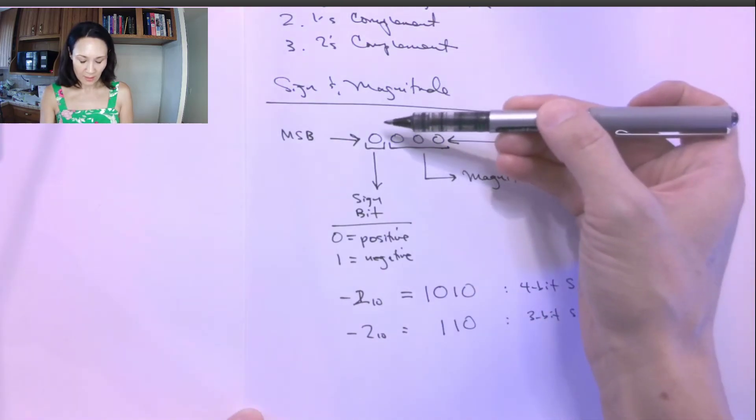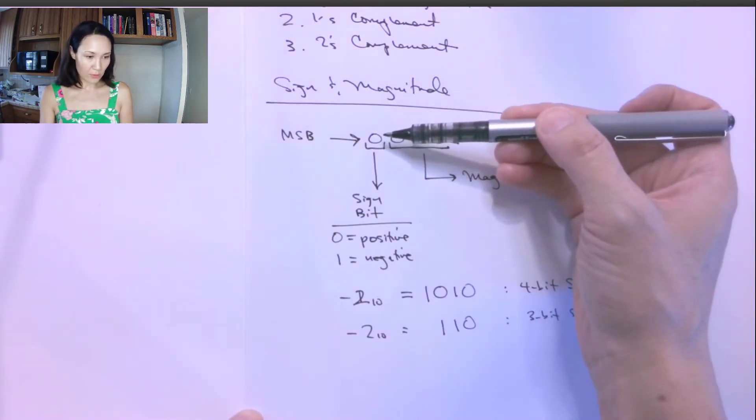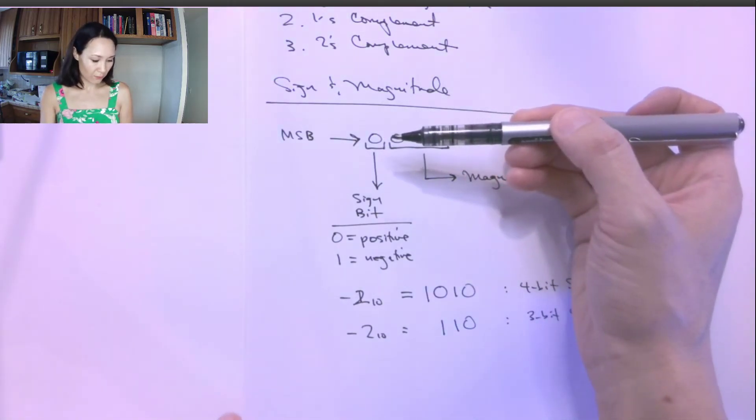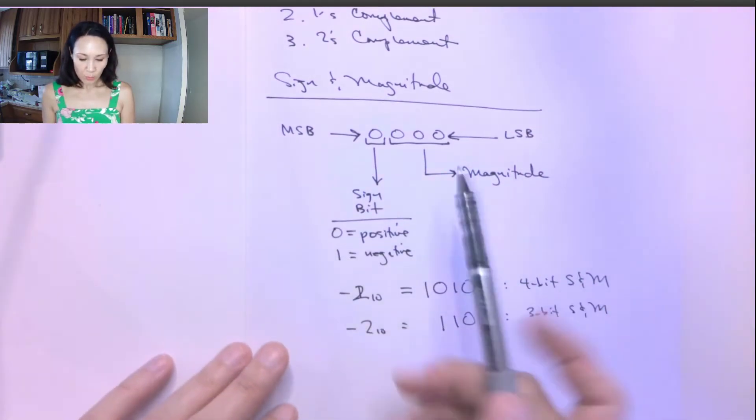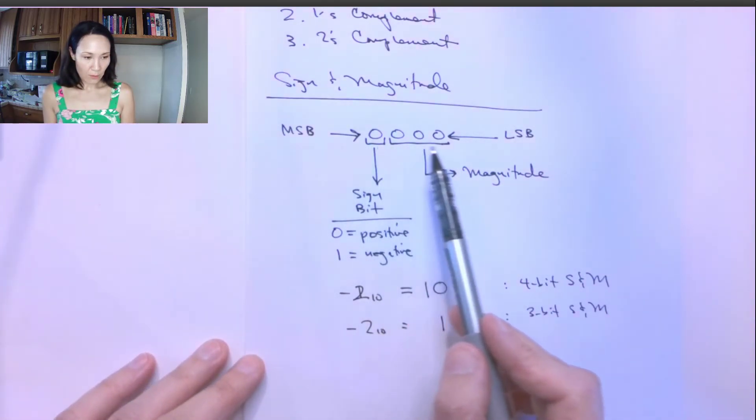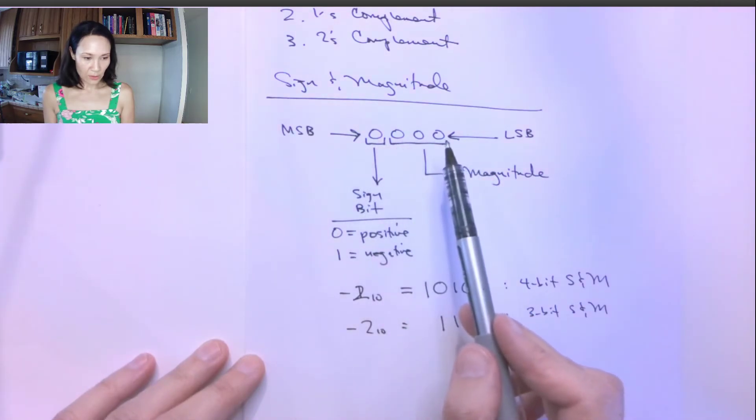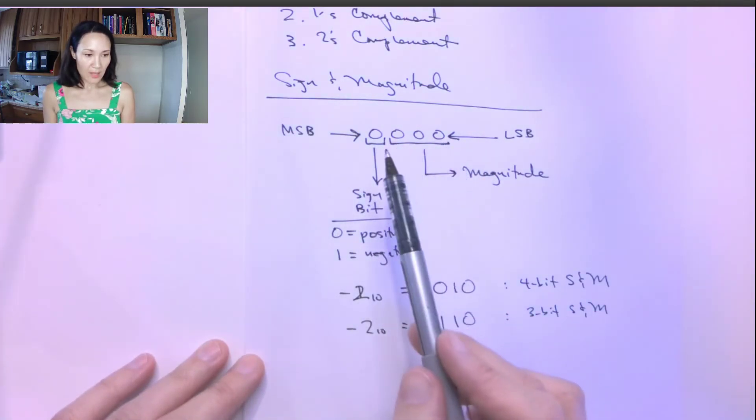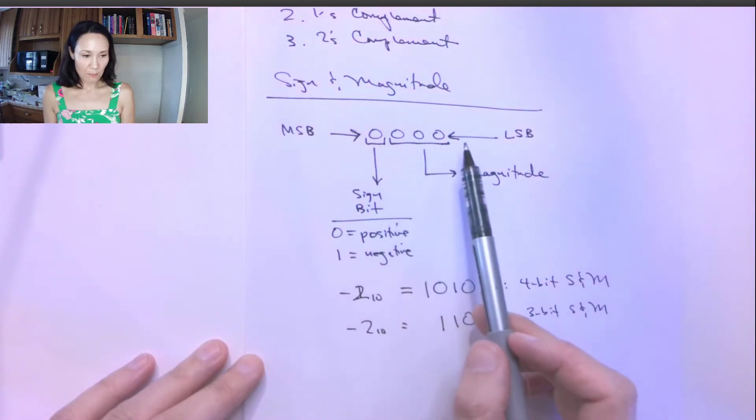All we need to do is just put a one here in the most significant bit position if it's a negative number. The problem is that previously, if we had four bits at our disposal to express a number, now we only have three bits.